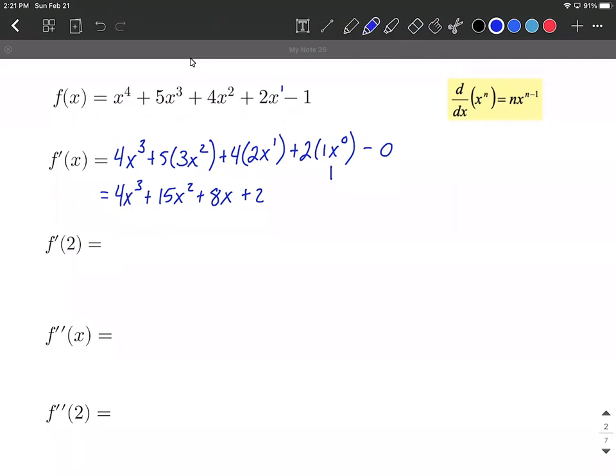Next up, let's evaluate this first derivative at two. We already have the derivative. We want to plug in two for each of our x's into that first derivative. We're going to have four times two to the third power. That's four times eight, which makes 32. Two squared in the second term is four, so 15 times four is 60, plus eight times two is 16, plus two.